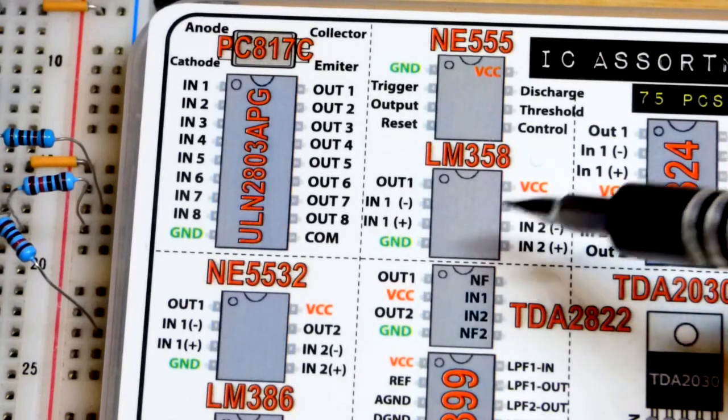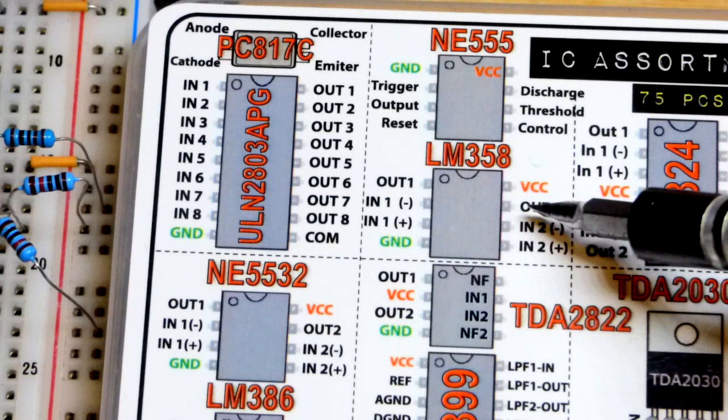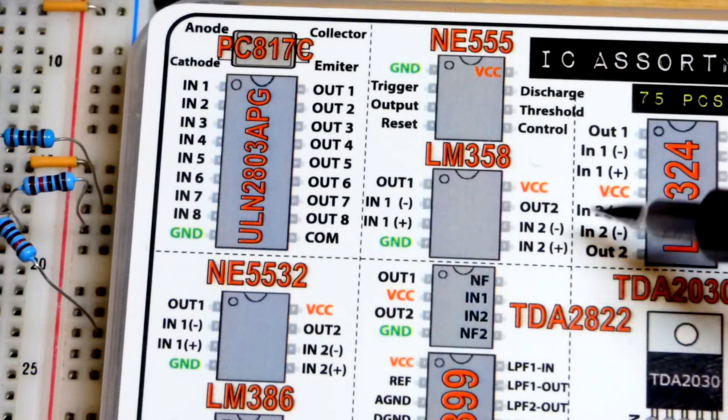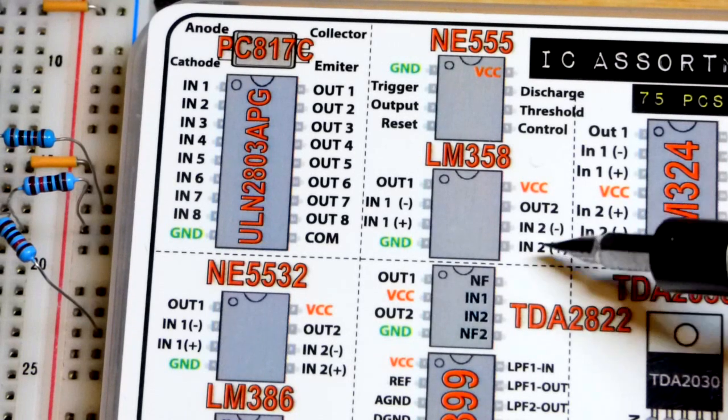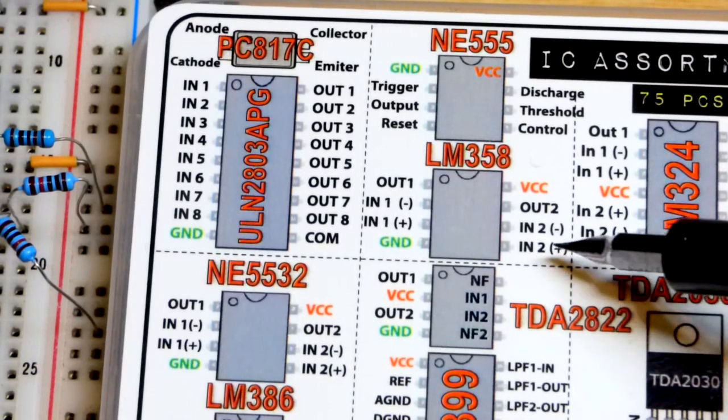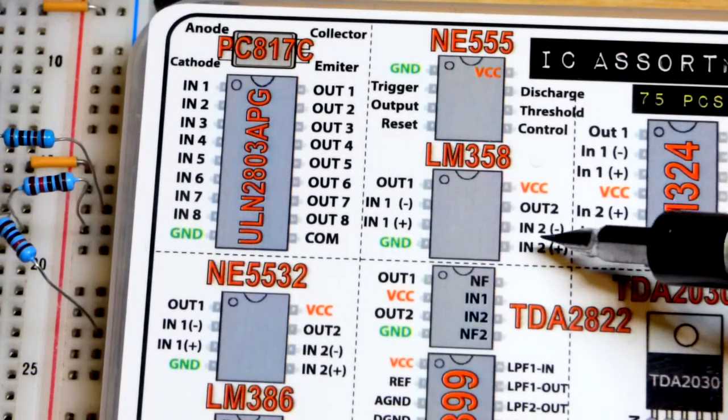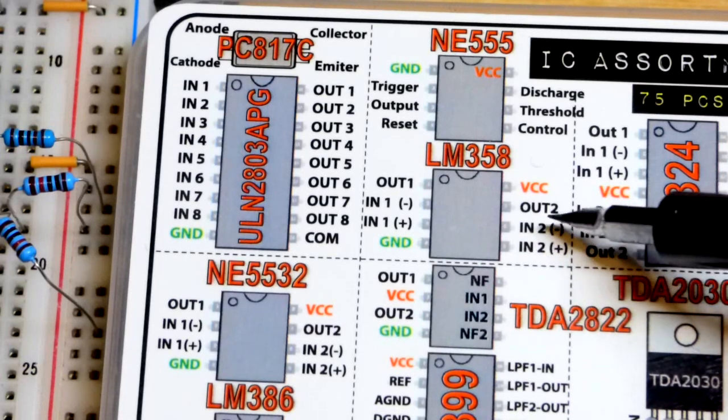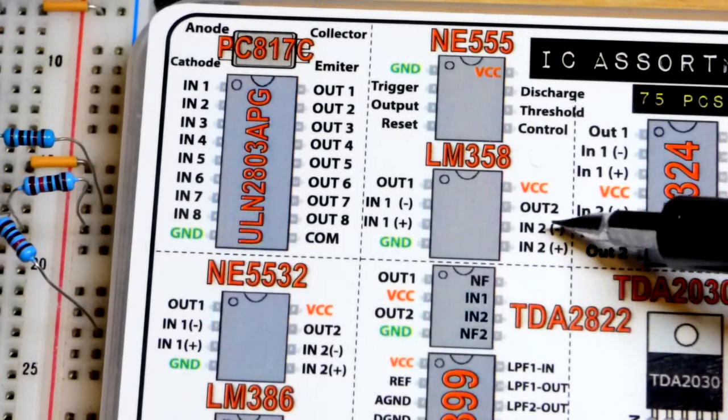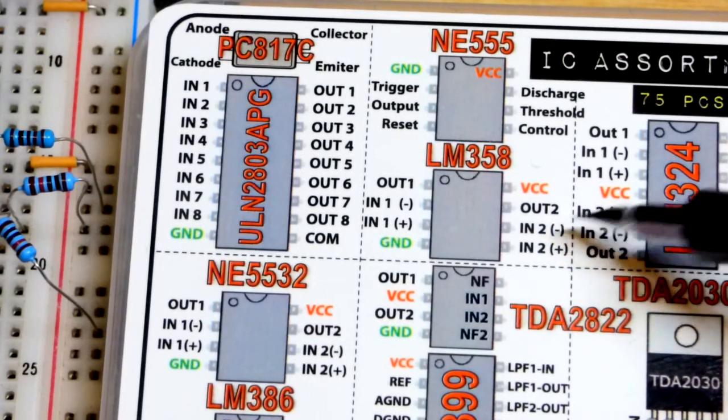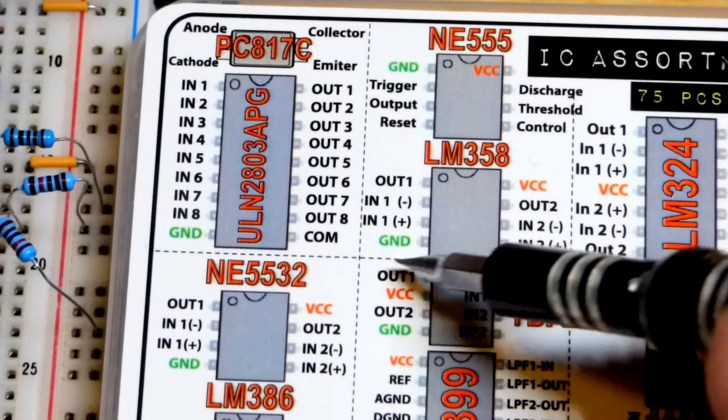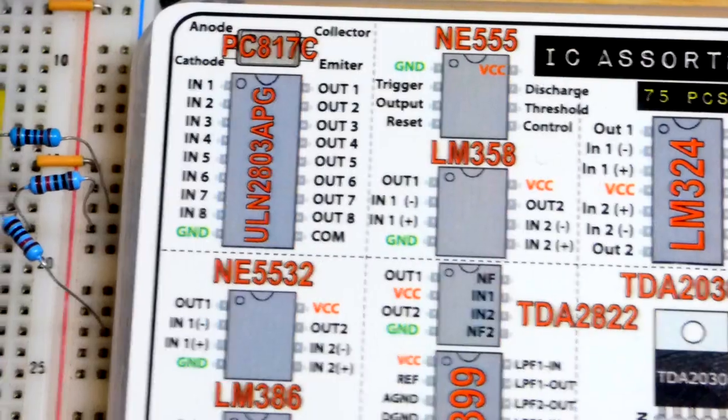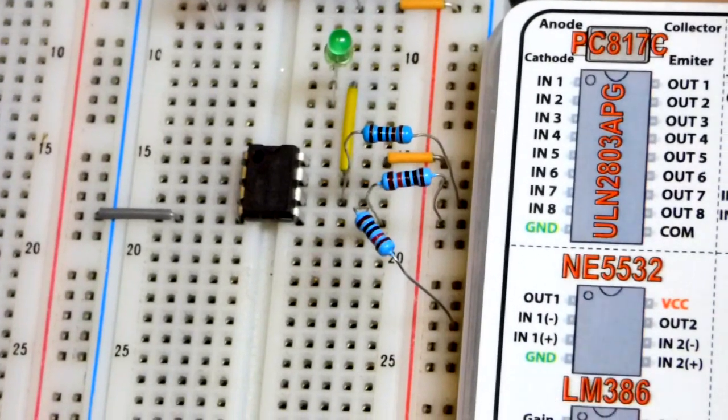So now for this video, we're going to use the op-amp on this side. One thing to note is that the inverting input is above the non-inverting input, whereas on the schematic, the inverting input was below. So you have to make sure you pay close attention and wire that current setting resistor to the inverting input. Also, we've got to power it: pin 8 VCC and pin 4 ground.